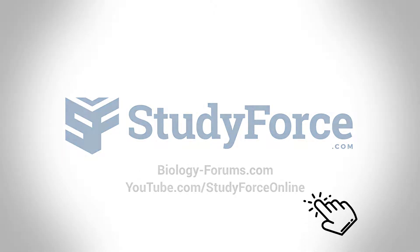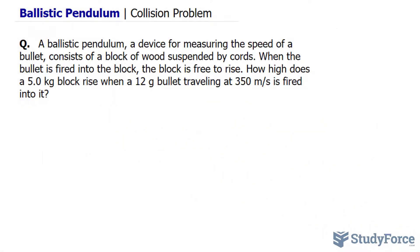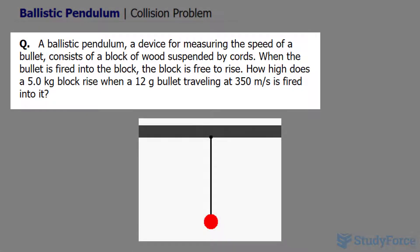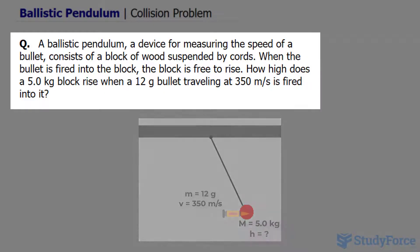In this lesson, we'll look at how to solve a collision problem involving a ballistic pendulum. The question reads: a ballistic pendulum, a device for measuring the speed of a bullet, consists of a block of wood suspended by cords. When the bullet is fired into the block, the block is free to rise. How high does a 5.0 kilogram block rise when a 12 gram bullet, traveling at 350 meters per second, is fired into it?